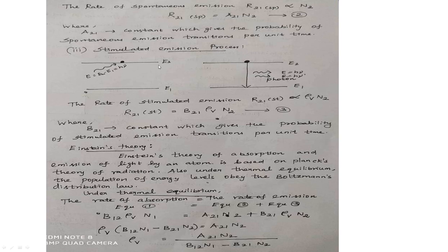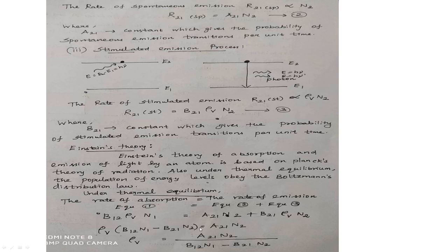These three equations — rate of absorption, rate of spontaneous emission, and rate of stimulated emission — are now combined. Under thermal equilibrium, the rate of absorption equals the rate of emission, so equation 1 equals equations 2 and 3 added together. Rearranging for ρ(ν): ρ(ν) = A21·N2 / (B12·N1 − B21·N2).